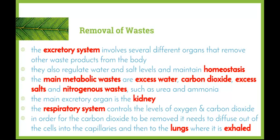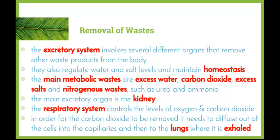We'll be looking at nitrogenous wastes in more detail in future lessons when we specifically look at the role of the kidney. The kidneys are the main excretory organ in the body. The respiratory system controls the levels of oxygen and carbon dioxide — the lungs are also considered excretory organs as they get rid of waste, in particular carbon dioxide. Carbon dioxide needs to diffuse out of the cells, into the capillaries, travel in the blood to the lungs, and then be exhaled.